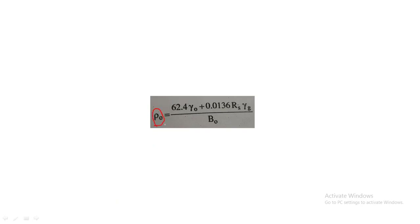Now let us see the density formula for crude oil. Density equals 62.4 times specific gravity, plus 0.0136 times gas solubility (Rs) times specific gravity of oil, divided by Bo. This formula for calculating density of oil applies only below the bubble point pressure. If you want to calculate the density of oil below bubble point pressure, you use this formula.